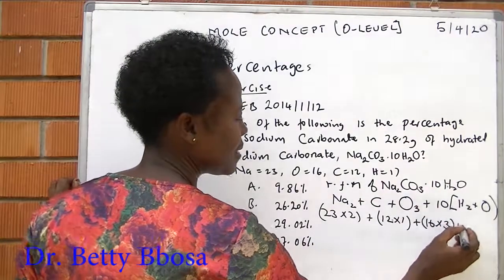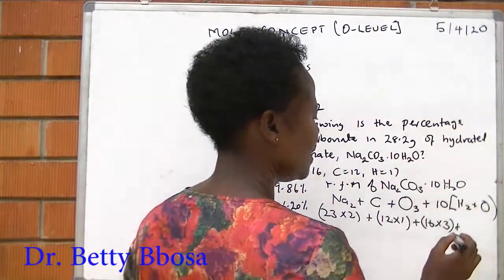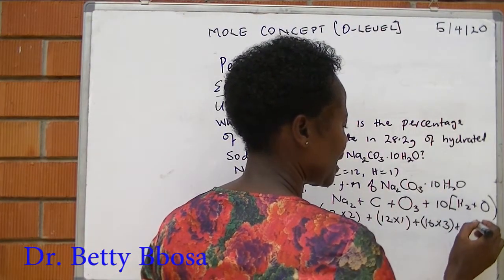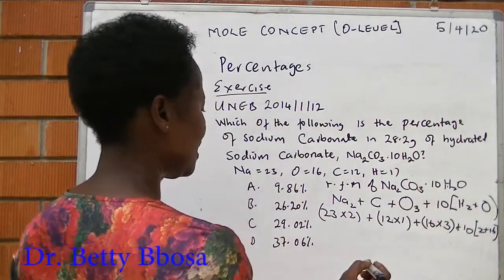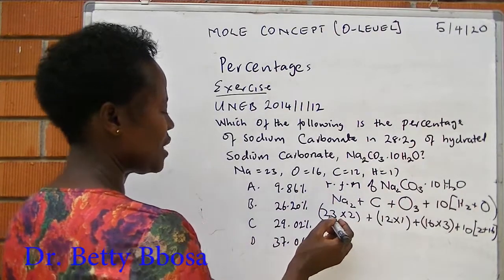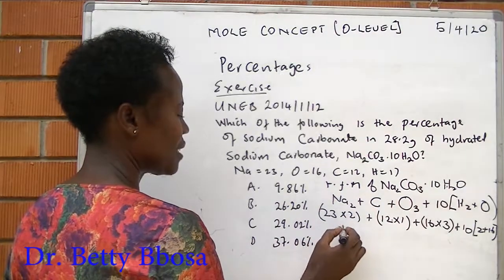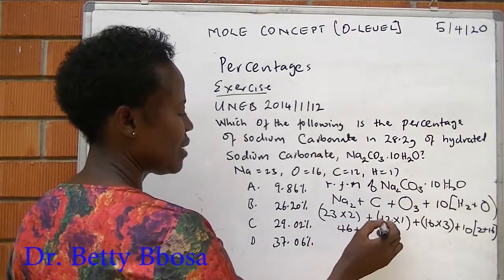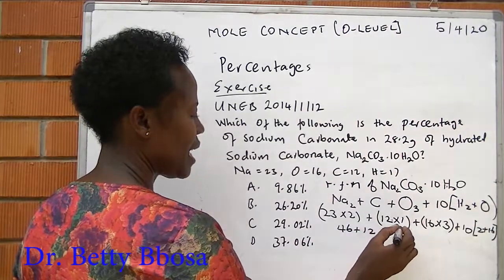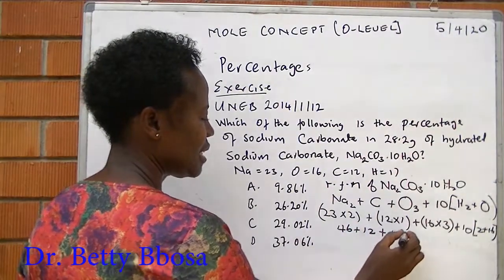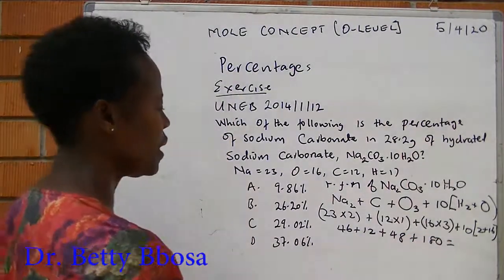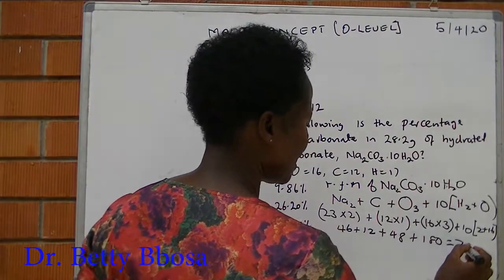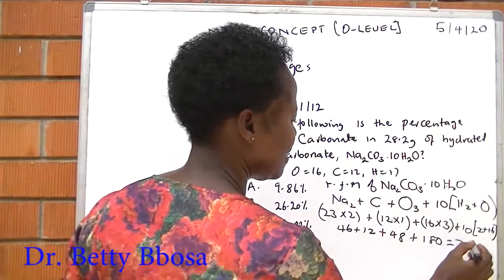Plus 10, bracket 2 plus 16, bracket. This is the same as 23 times 2 is 46, plus 12, plus 48, plus 180. And the total will be 286.